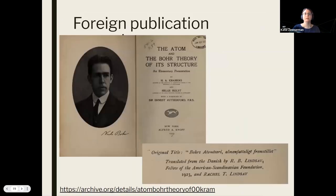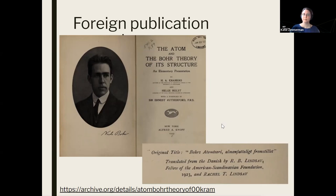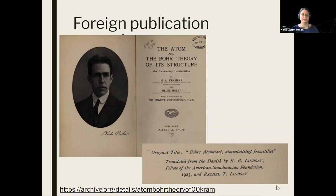Here's one example book from the MIT Libraries. This is a book about Niels Bohr. From the title page, we see New York, the publisher Alfred Knopf, 1923 — it looks pretty much like a US publication. But when you flip the page, there's a note with the original title in Danish and a note saying it's translated from the Danish in 1923, which might be a hint that there is an earlier publication not published in the United States. So that might be a sign that there are some complications — that Danish work could potentially still be in copyright in the United States.